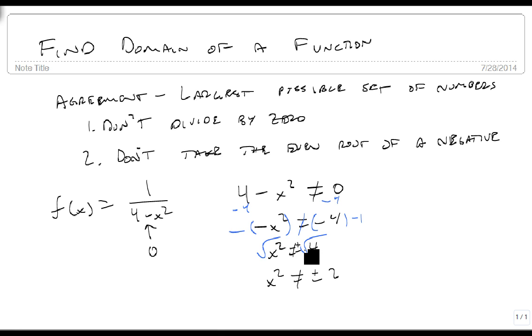Remember, we always add the plus or minus when we use the square root of a variable. So x can't be positive or negative 2.